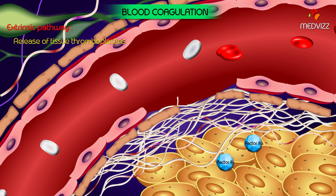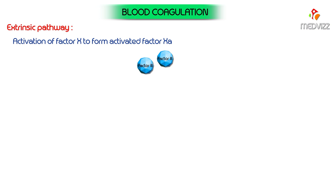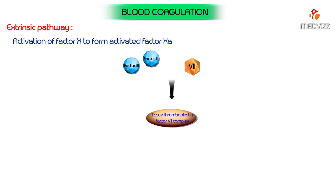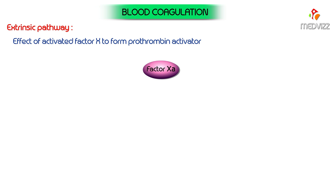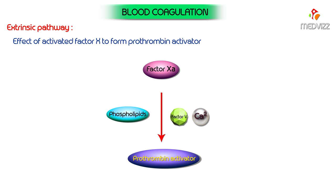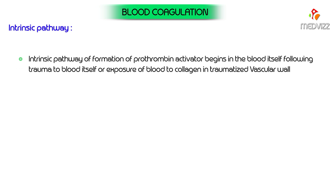Activation of factor 10: tissue thromboplastin combines with factor 7 (the stable factor) to form the tissue thromboplastin-factor 7 complex, which in the presence of calcium activates factor 10 to form activated factor 10. The activated factor 10, along with tissue phospholipids or phospholipids released from platelets, factor 5, and calcium, forms a complex called prothrombin activator. The intrinsic pathway of formation of prothrombin activator begins in the blood itself following trauma to the blood or exposure to collagen in the traumatized vascular wall.